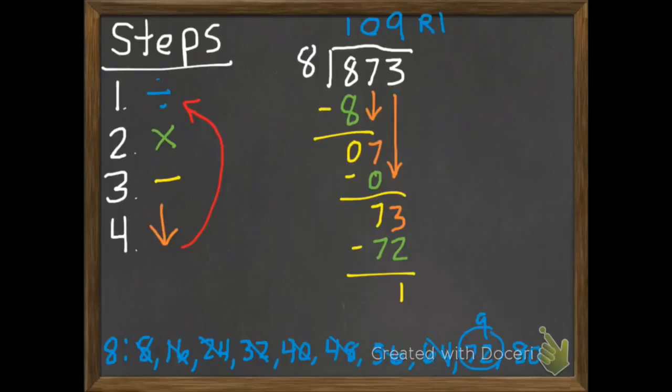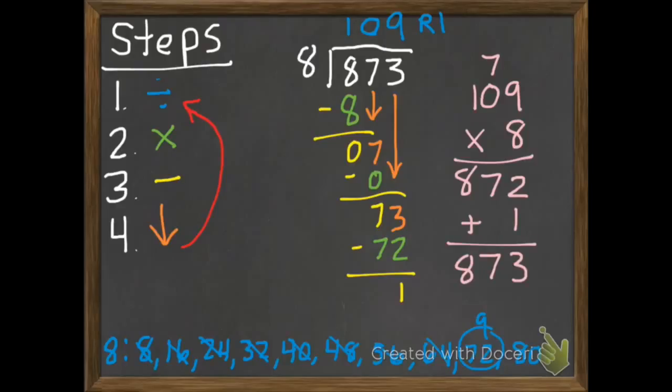109 remainder 1. Check my work. 9 times 8 is 72. 8 times 0 is 0, plus 7 is 7. 1 times 8 is 8. Add our 1. 873.